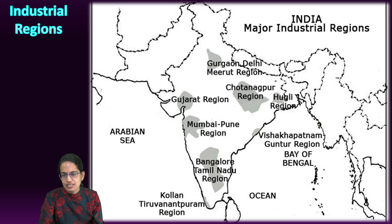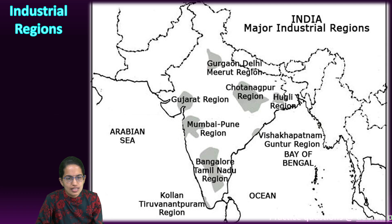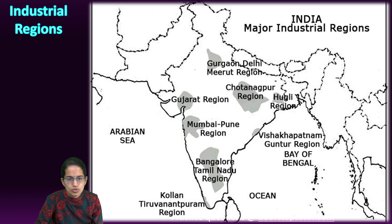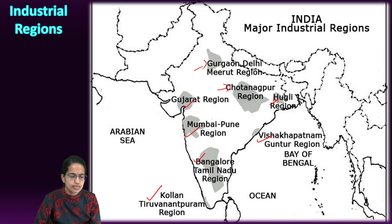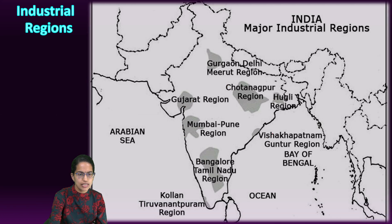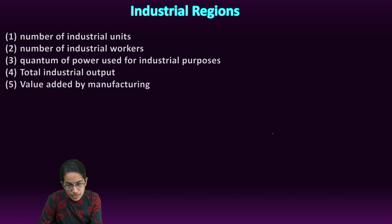What are the major industrial regions in India? As you can see in this diagram, we have industrial regions in the north as well as south. These include Gurgaon, Delhi-Meerut, Chhota Nagpur region, Hugli region, Gujarat, Mumbai, Pune, Bangalore, Thiruvananthapuram, Vishakhapatnam, and Guntur — some of the major industrial clusters in India.